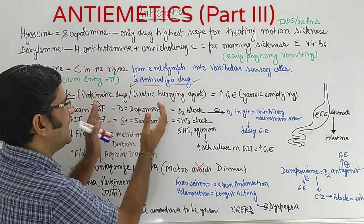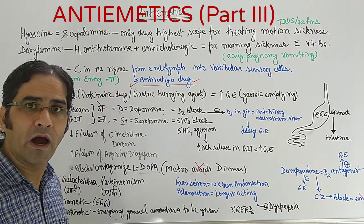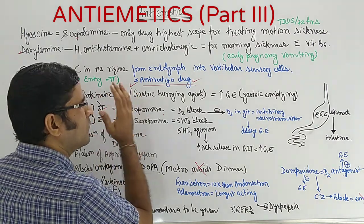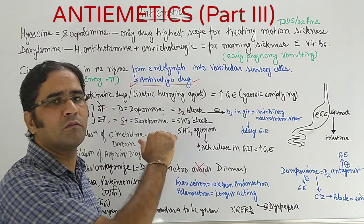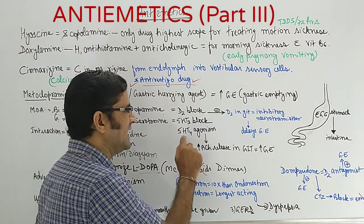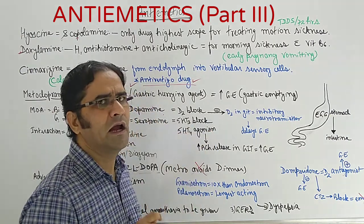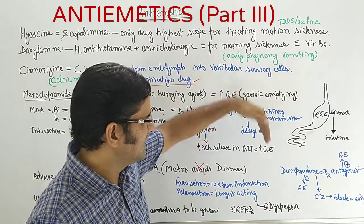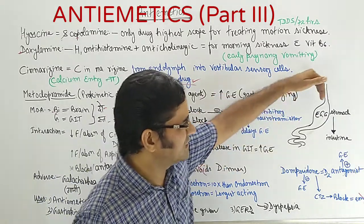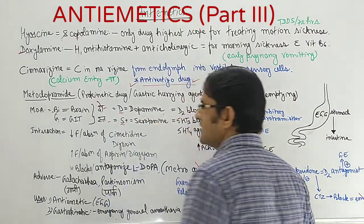So on one hand we are blocking these two, but on other hand we are calling it 'dost' also. Why? Because apart from blocking, metoclopramide acts as agonist also. Where does it act as agonist? At 5HT4. What happens? Acetylcholine will be released, then gastric emptying will be fast, the content will move fast. So this is the mechanism of action.